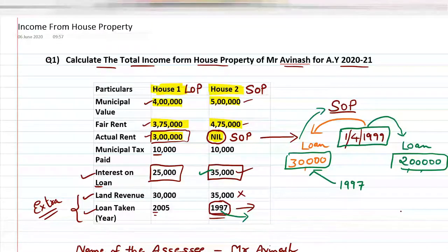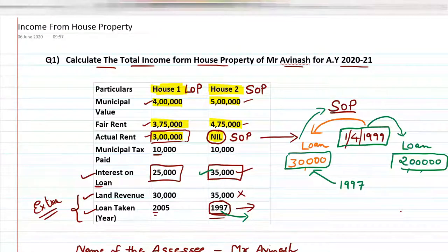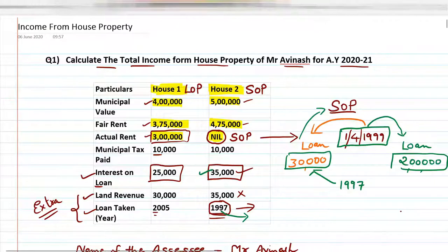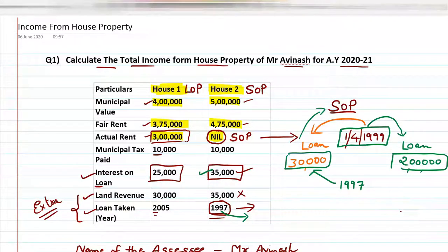When we talk about house property, there are two types: one is LOP and the other is SOP. LOP means let-out property and SOP means self-occupied property. If we give property on rent, it is called let-out property; if we don't, it is called self-occupied property.